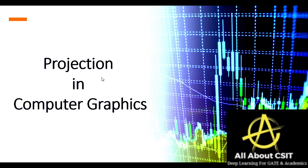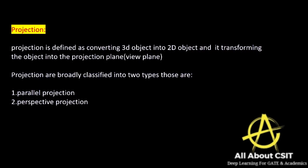The next topic is projection in computer graphics. Projection means showing something on a 2D plane or paper. Projection is defined as converting a 3D object into a 2D object and transforming it into the projection plane or view plane.